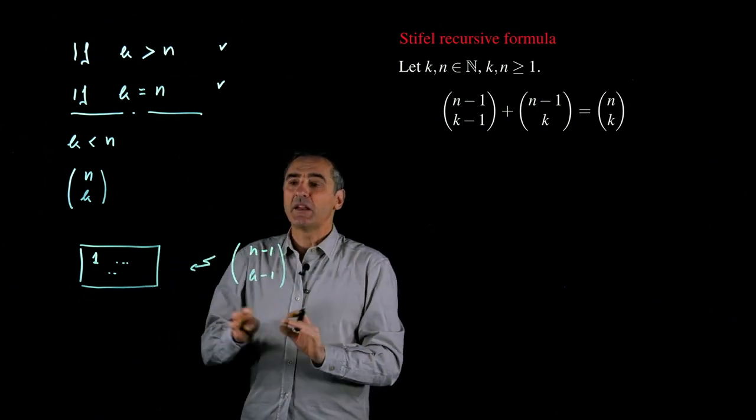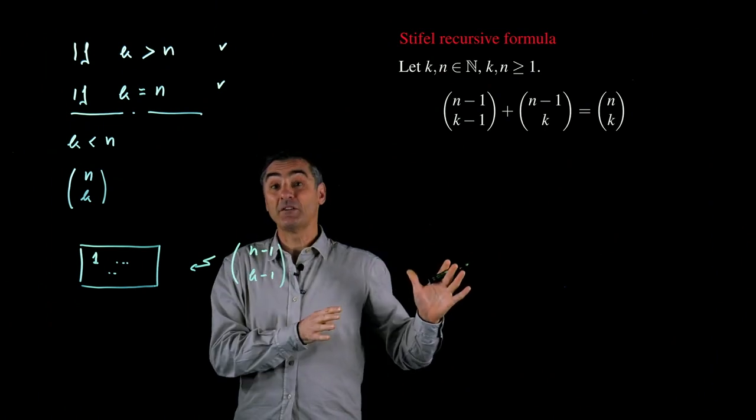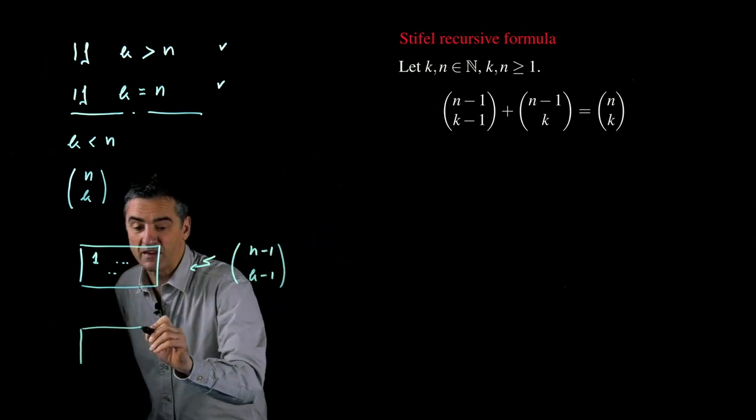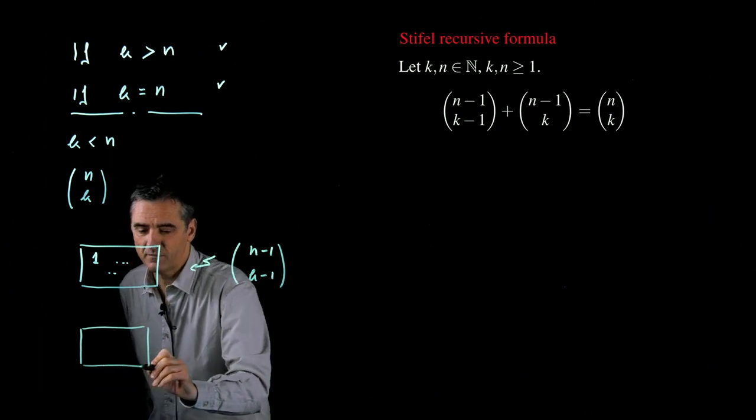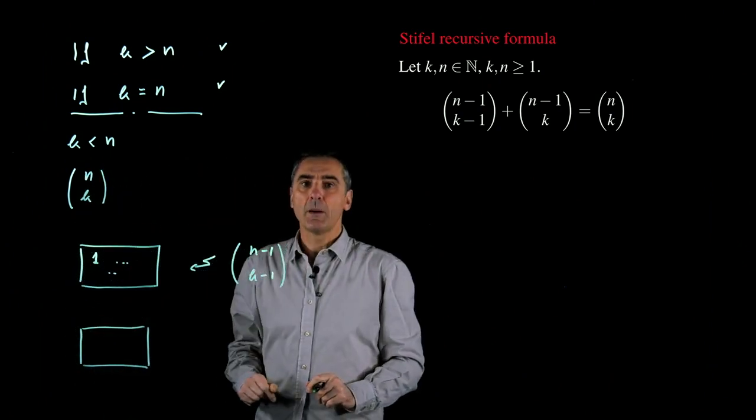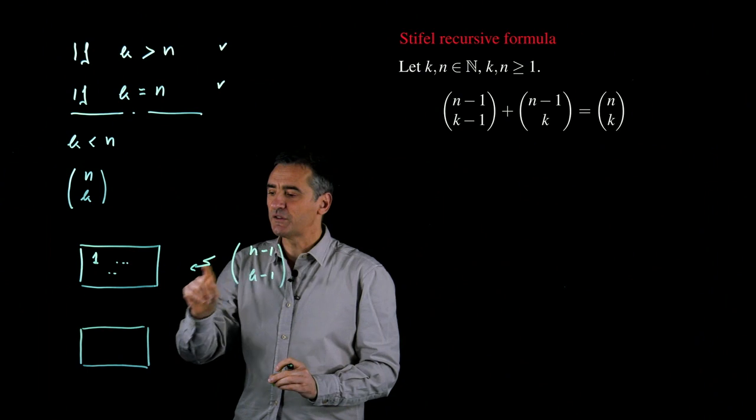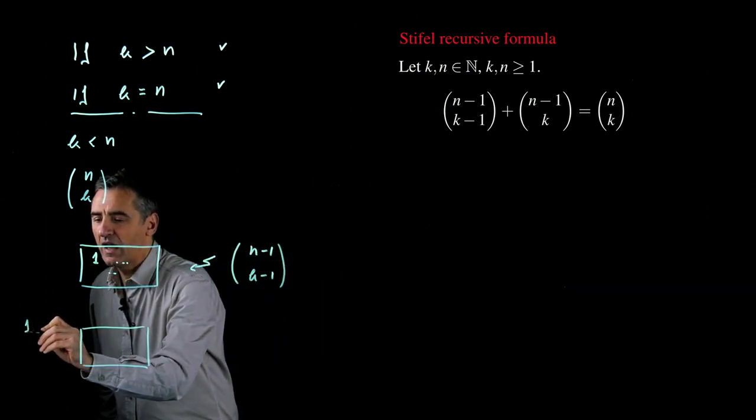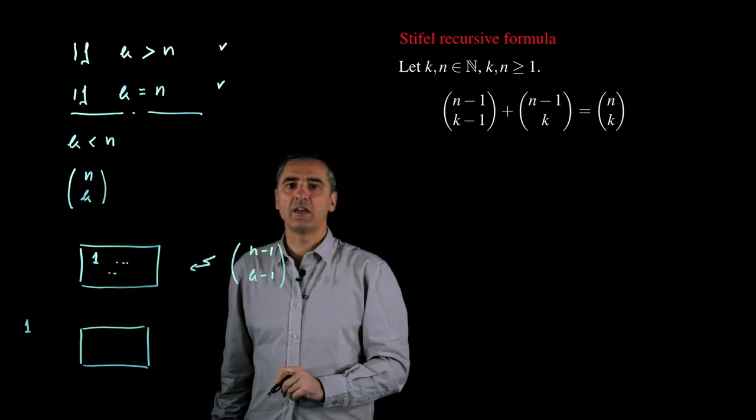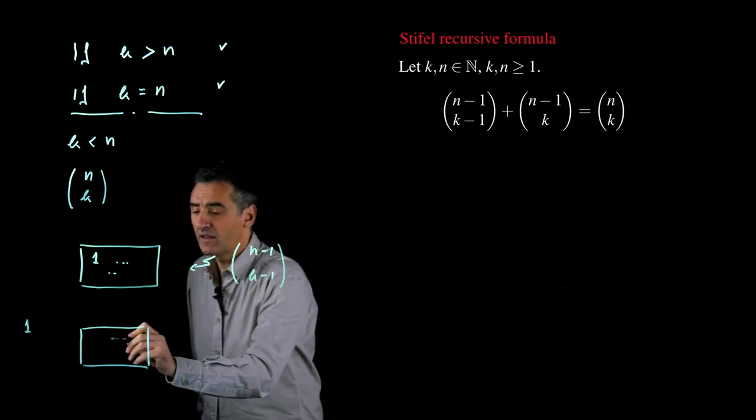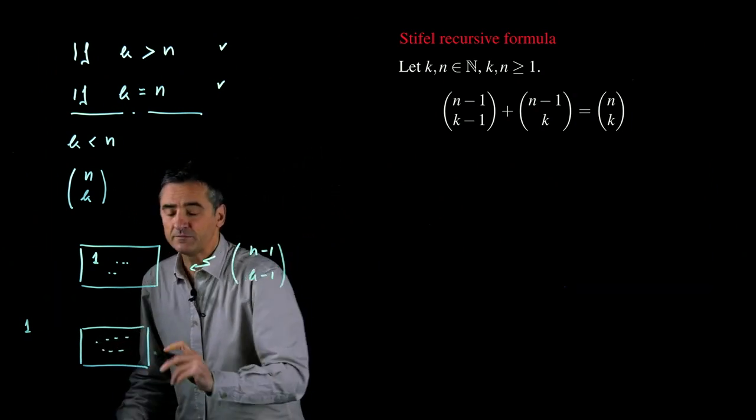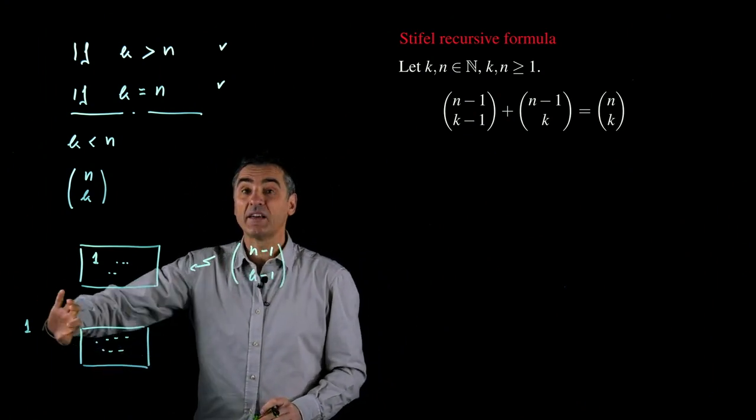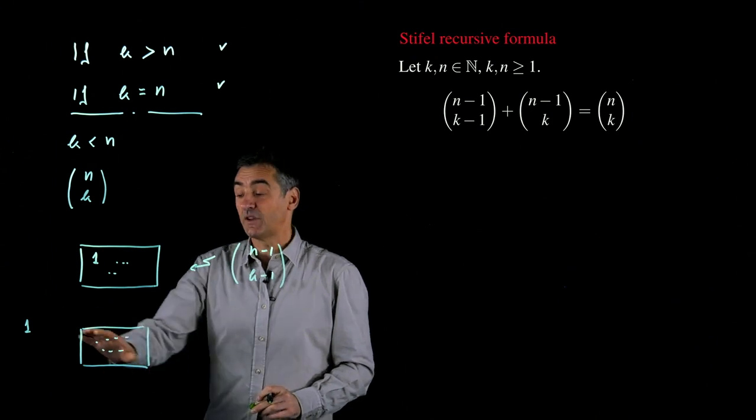And now we can do the complementary. I mean, I wish to choose k numbers among n, but now I don't want 1 inside. 1 has to be outside. In how many ways I can choose now k numbers among n with 1 outside?